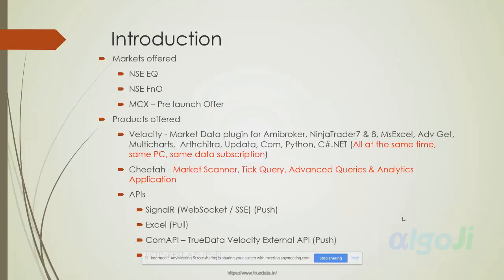Our flagship product is Velocity — a very unique market data plugin for Amibroker, NinjaTrader 7 and 8, Excel, Advanced Get, MultiCharts, Updata, and programmable libraries in Python and C# .NET. The data goes into all of these applications simultaneously on the same PC under the same subscription. Unlike other services where you buy separately for each application, here you don't need to — the APIs are tailored to keep adding multiple applications to Velocity.